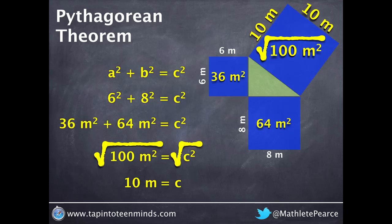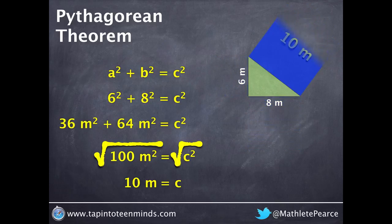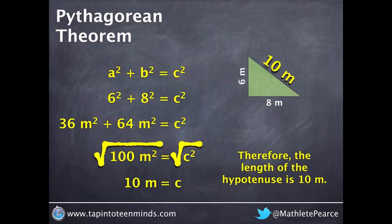And since the square root of 100m squared is 10, our hypotenuse for this right angle triangle is 10m.